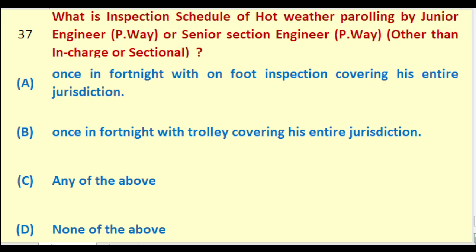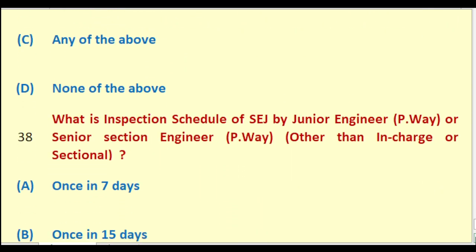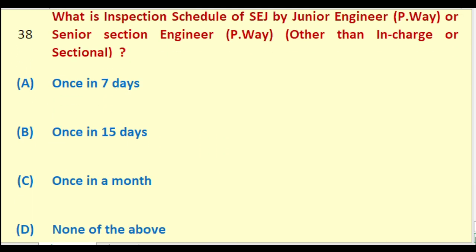What is the inspection schedule of SAGE by Junior Engineer Permanent Way other than in charge or sectional? Options: once in seven days; once in 15 days; once in a month; none of the above. The right answer is: once in 15 days.